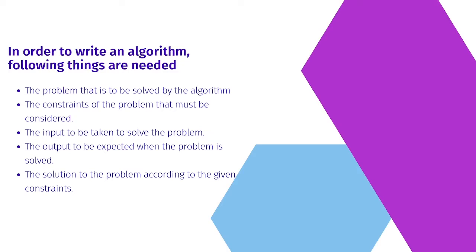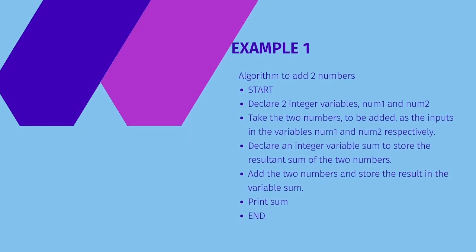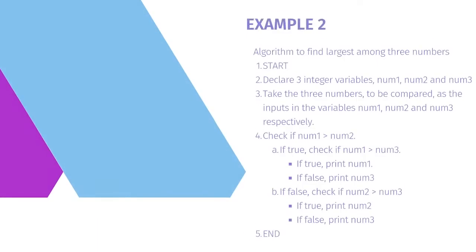So with this, let's look at an example — an algorithm to add two numbers. First, we start. We declare two integer variables num1 and num2 and take two numbers as input from the user, storing them in num1 and num2 respectively. Then we declare an integer variable sum, add the two numbers, and store the result in sum. Finally, we print sum, and that will be the end of this algorithm.